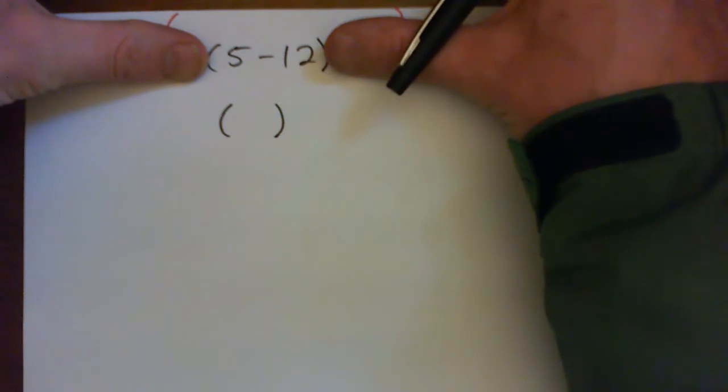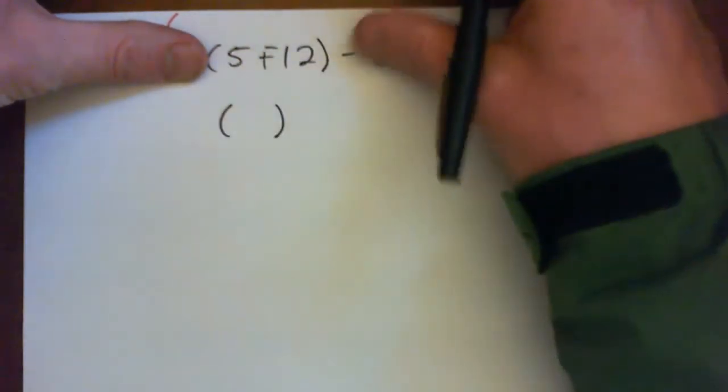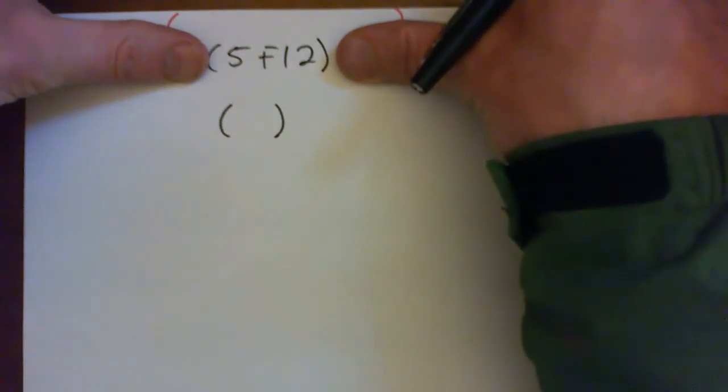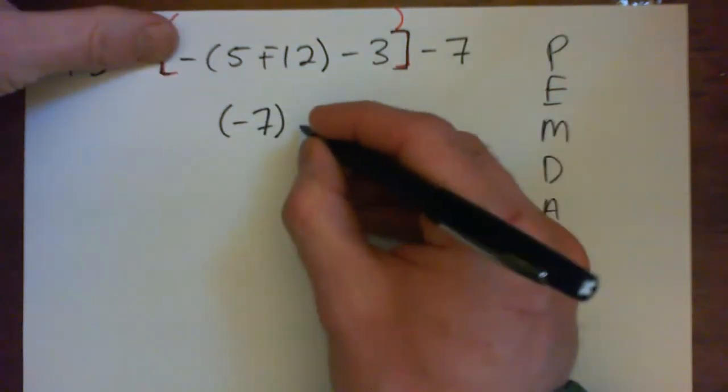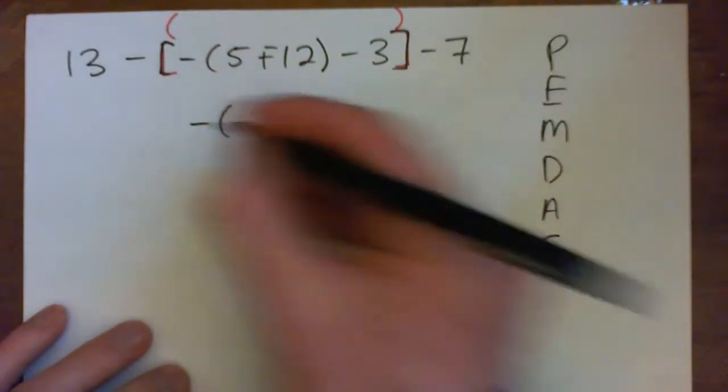So you've got 5 dollars, you subtract 12 dollars, and what do you have now? Or you can do your blam blam, 5 plus negative 12, 5 good guys and 12 bad guys makes 7 bad guys, right? And now just write everything out the same.